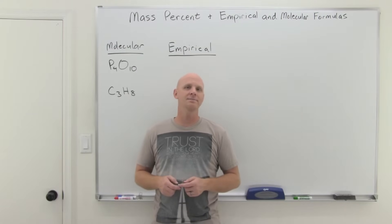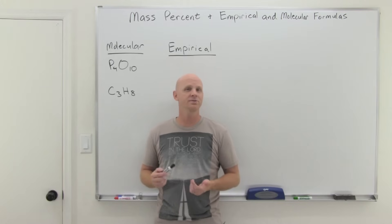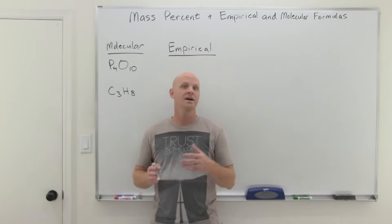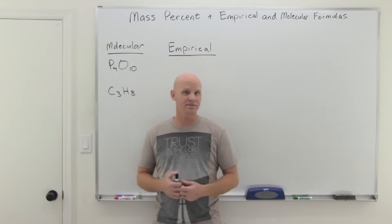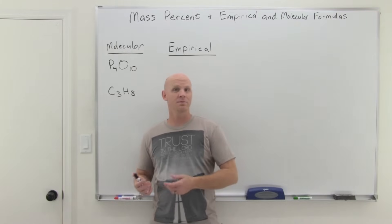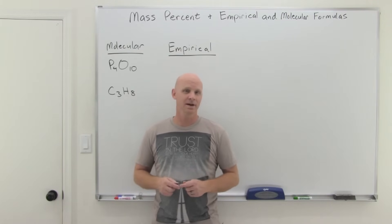Mass percent and empirical and molecular formulas is the topic in this third lesson on stoichiometry. We'll start by comparing and contrasting empirical formulas and molecular formulas. We'll see how they're quite often one and the same, but also how they're different and how you can reduce one to the other. Then we'll relate them to mass percents and see how they can be used to determine the mass percents of different elements in a compound, or how these mass percents can be used to determine both the empirical and possibly molecular formulas.